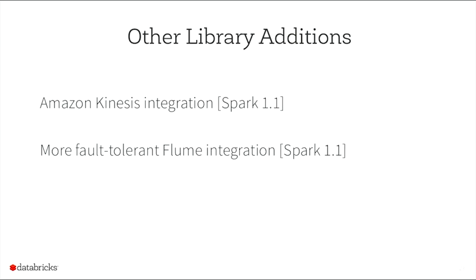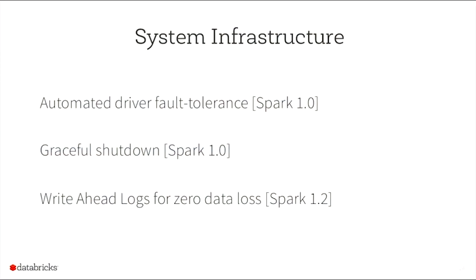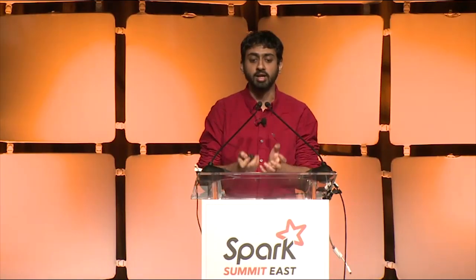Other library additions include Amazon Kinesis integration in Spark 1.1, and more fault-tolerant Flume integration also in Spark 1.1. We are continuously improving existing integrations. On the system infrastructure side, we added automated driver fault-tolerance in Spark 1.0, graceful shutdown in 1.0, and write-ahead logs for zero data loss even with driver failures in Spark 1.2.